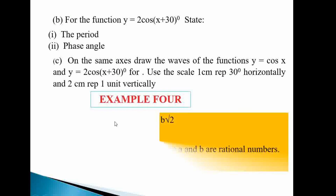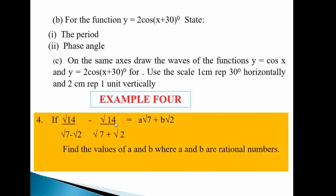Example four: Express √14/(√7 − √2) minus √14/(√7 + √2) in the form a√7 + b√2, where a and b are rational numbers. Find the values of a and b.